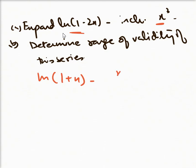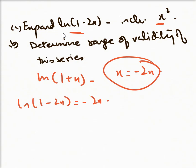Instead of x, we will replace it with -2x. So this series becomes -2x minus (-2x)²/2 plus (-2x)³/3. Expanding it further, we get -2x - 2x² - (8/3)x³.